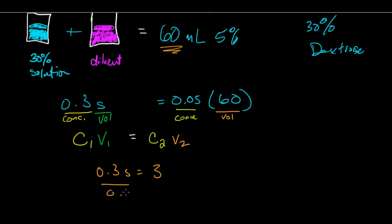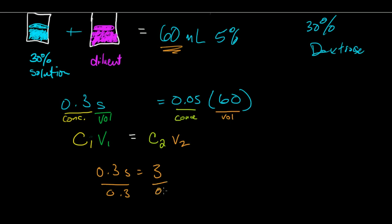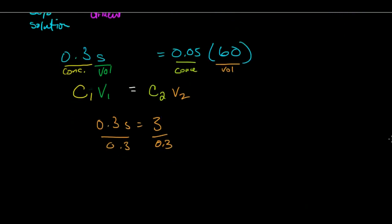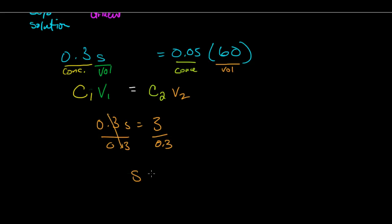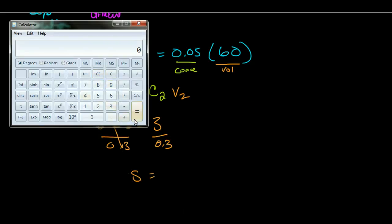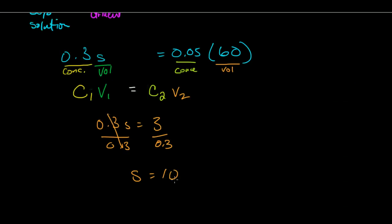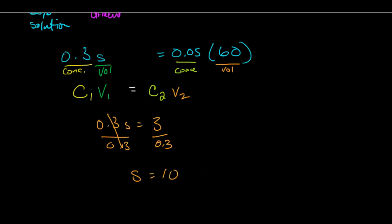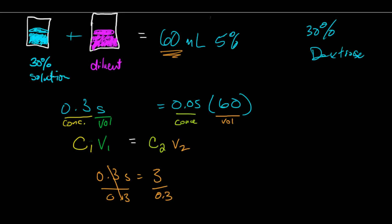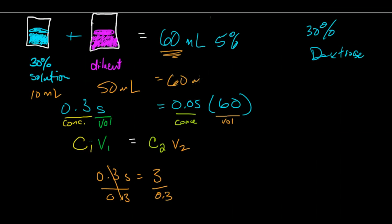So when I divide that I will get that I need to use, trusty calculator divide 3 by 0.3, I will get 10. I'll need to use 10 milliliters of my 30% solution plus 50 milliliters of my diluent and that will give me 60 milliliters of my 5% solution.